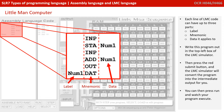Let's actually write this program out into the top left box of the LMC simulator. Once you're done, press the red submit button. The LMC simulator will then convert the program into the intermediate output, which will appear in the right-hand column. You can then press run and watch your program execute.